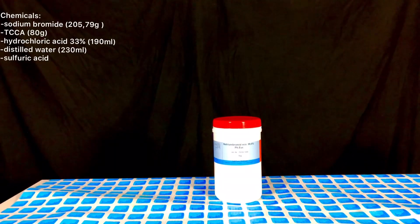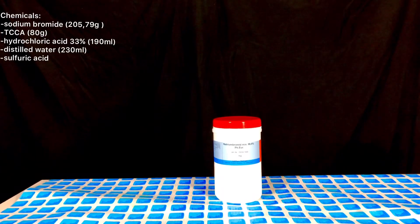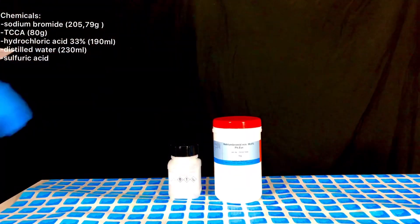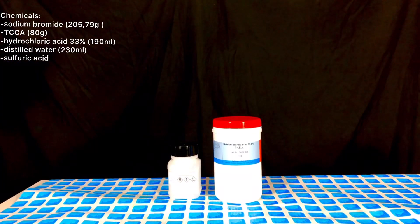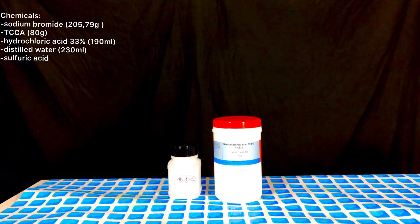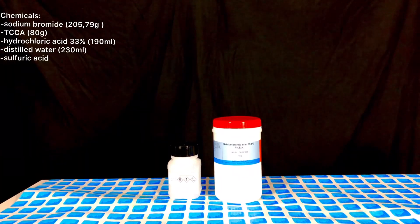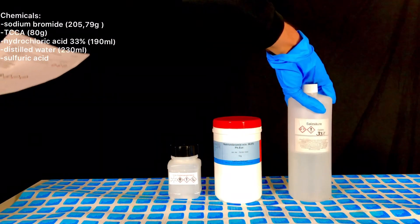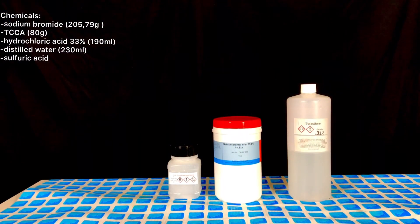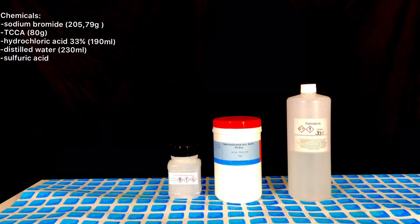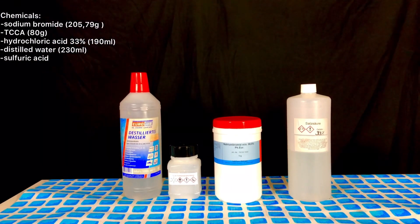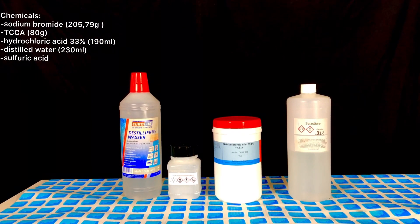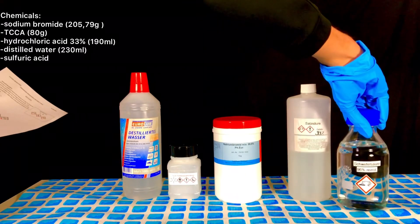For this experiment you are going to need 205.79 grams of sodium bromide, 80 grams of TCCA or trichloro-isocyanuric acid, 222 grams or 190 milliliters of 33% hydrochloric acid, 230 milliliters of distilled water and also some sulphuric acid for drying the bromine in the end.